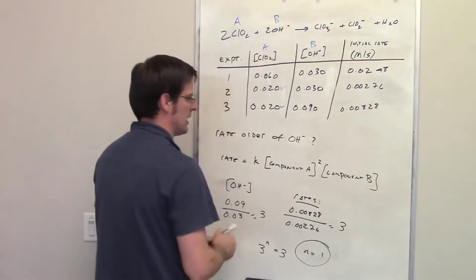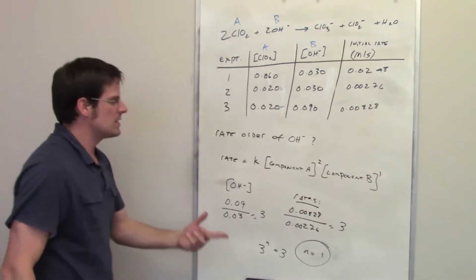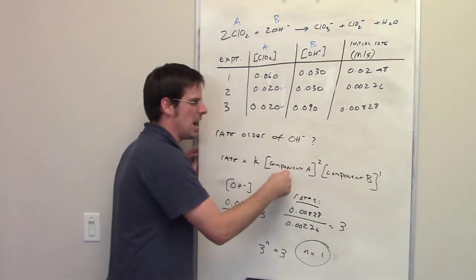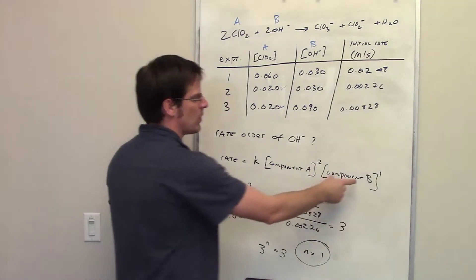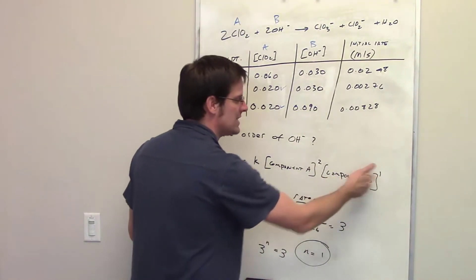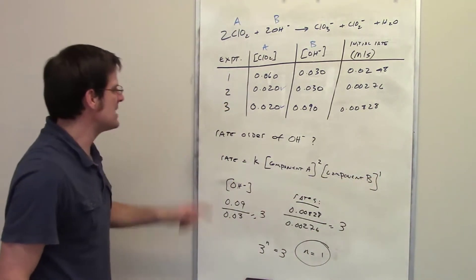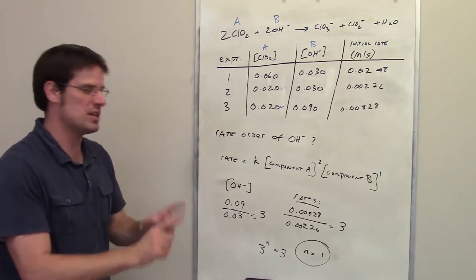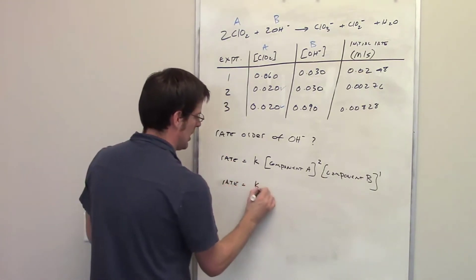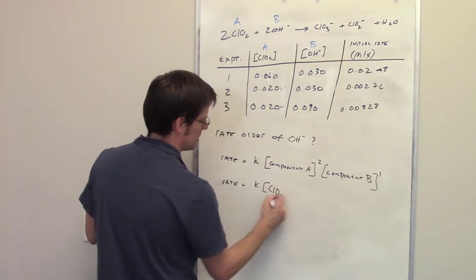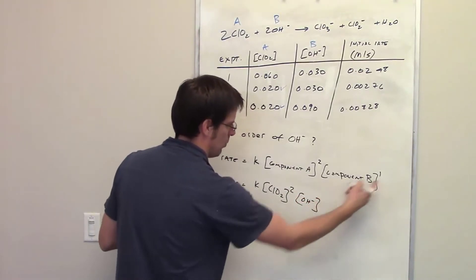What does that really mean? If I were to double the concentration of A, I would quadruple the rate because it's doubled squared. If I were to double the concentration of B, it would only double the rate because it's doubled to the first power. We can rewrite the rate law as K multiplied by the concentration of chlorine dioxide squared, multiplied by the concentration of hydroxide to the first power.